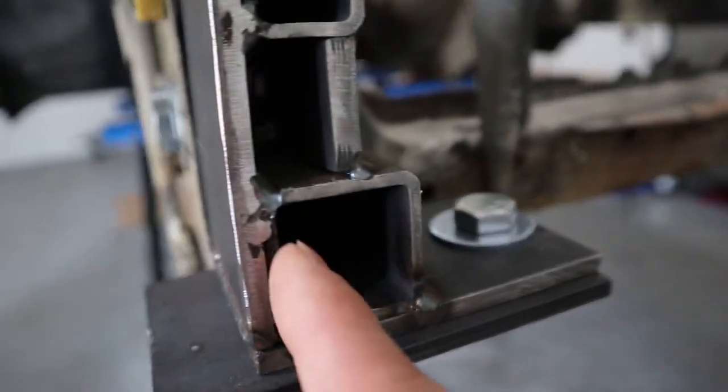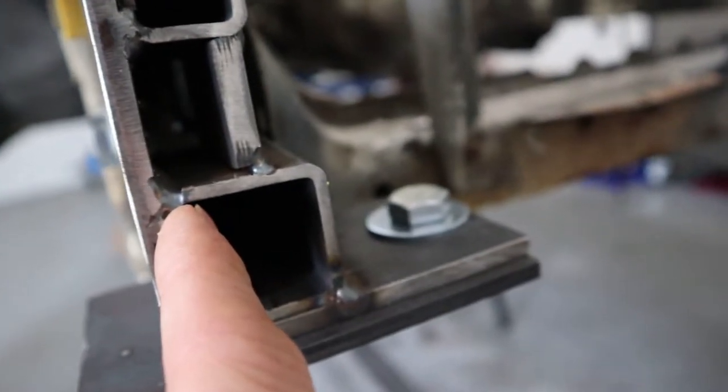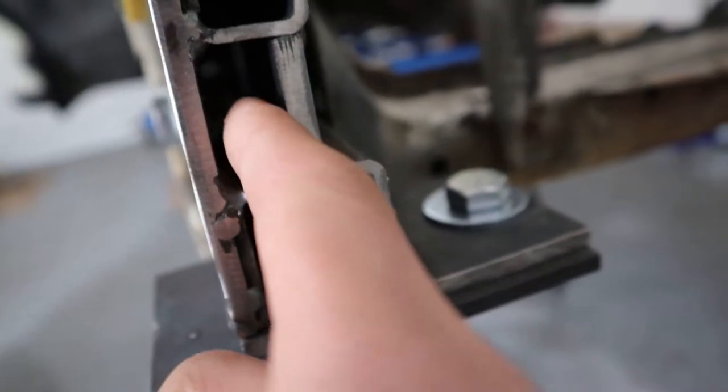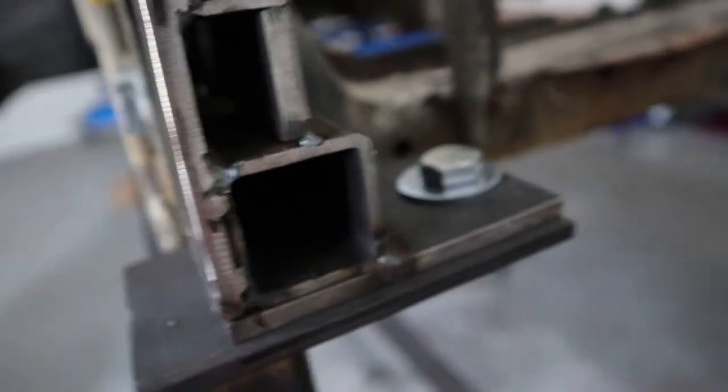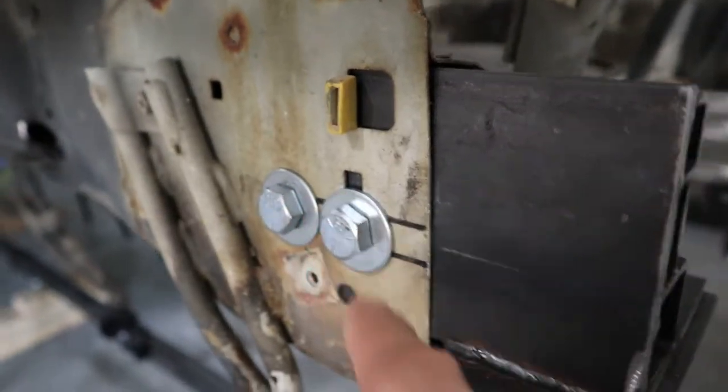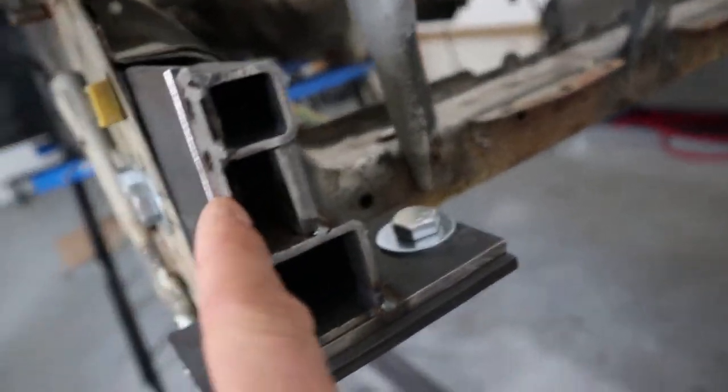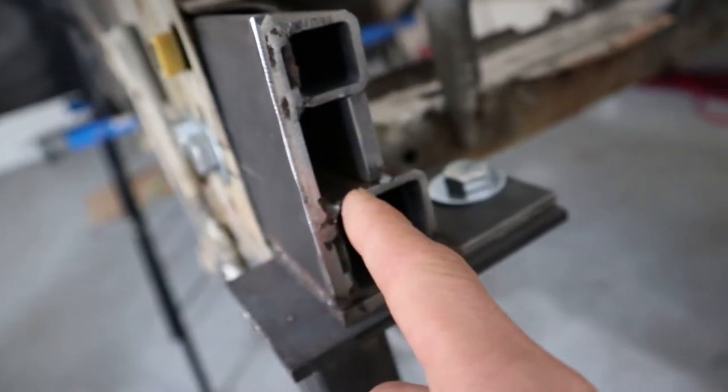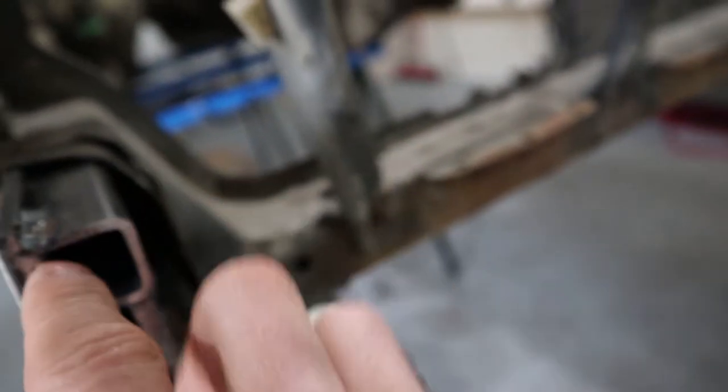When you put these bolts in, they hit the back of this HSS, this tubing here. So you just got to go in there and grind a little bit of tubing so when you put your bolt through and weld your nut to this plate, it's clear. It doesn't hit, it bottoms up.